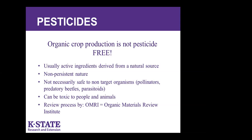Another falsehood out there: when you go to a store and buy organic produce, a lot of people feel these are pesticide-free, and that's simply not true. They do use pesticides on much of the organic produce, but these products are usually derived from a natural source, are usually non-persistent in nature, and OMRI — the Organic Materials Review Institute — designates them as organic products. But don't be fooled — these are not necessarily safe to pollinators, predatory beetles, or parasitoids, and sometimes they can be toxic to people and animals if not used according to the label.